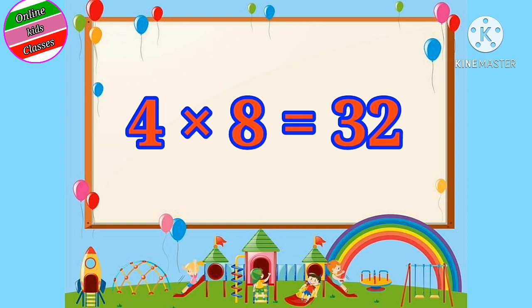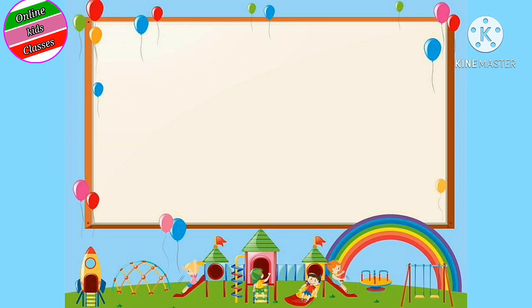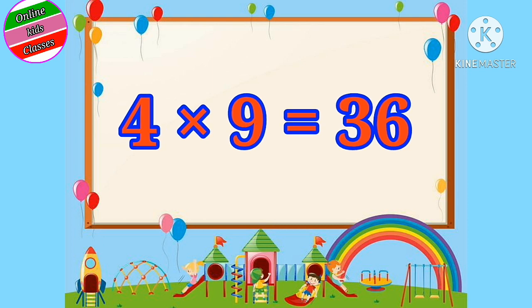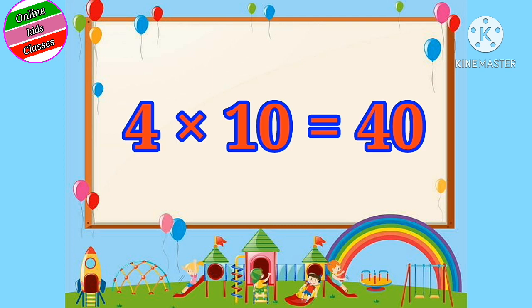Four eights are thirty-two. Four nines are thirty-six. Four tens are forty.